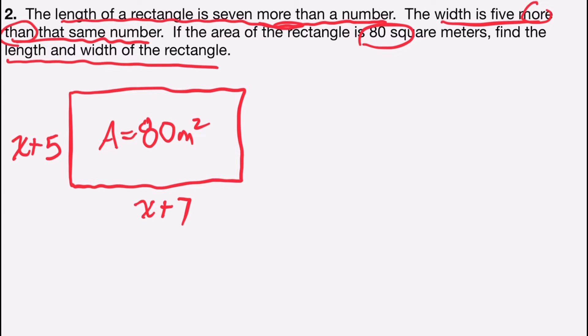Now I'm going to set up my equation. I know that area of a rectangle is equal to the length times the width. So the area will substitute 80, the length is x plus seven, and the width is x plus five.